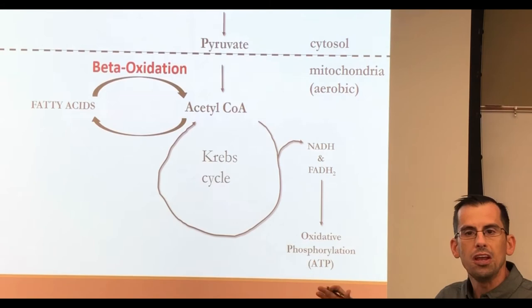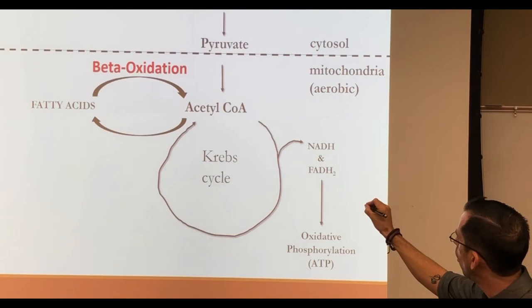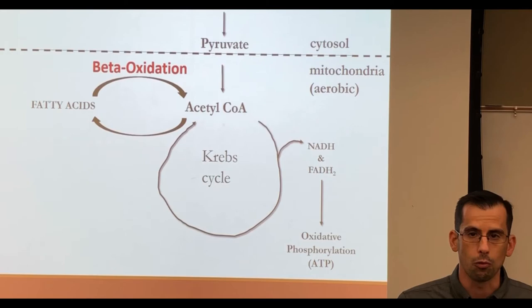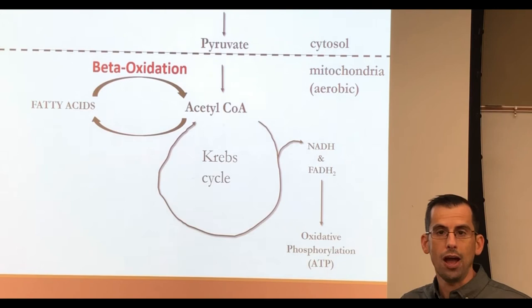Here is where we see our beta oxidation process fit into this current model. Fatty acids break down into acetyl-CoA through the process of beta oxidation. As the other arrow would suggest, if we want to produce a fatty acid, say if we were producing cellular membranes, we could take these acetyl-CoA molecules and link them together to form longer chain fatty acids.